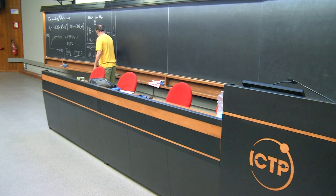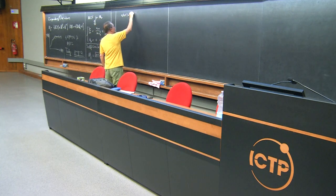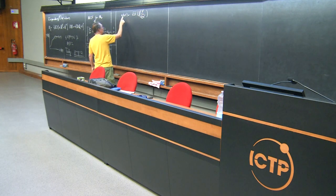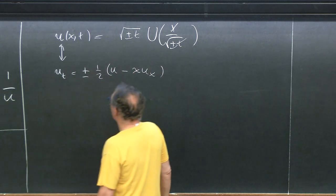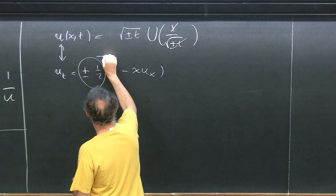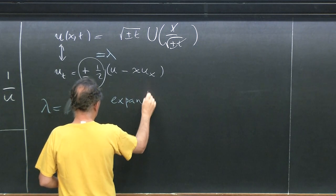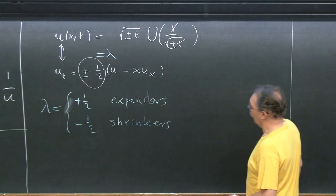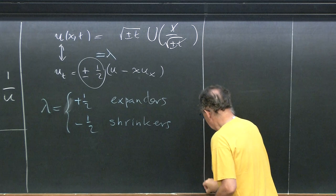If you look for self-similar solutions of this type, for the plus sign you get expanders, for the minus sign you get shrinkers. These correspond to solutions where u_t equals one-half times (u minus x times u_x), with a plus or minus sign. I'll abbreviate that plus or minus one-half as lambda.